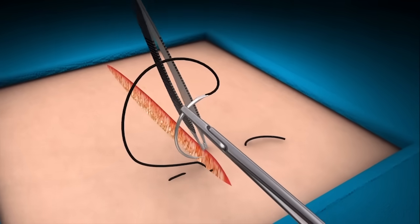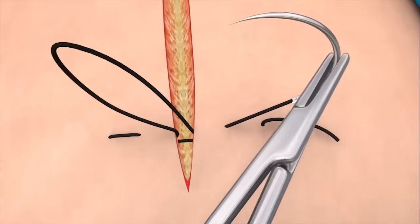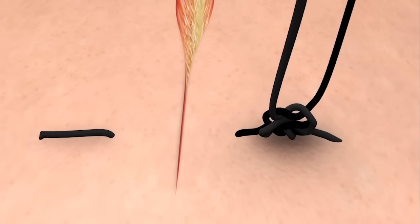Repeat on the opposite side of the wound from inside to outside. Pull the suture through and then tie a standard knot without excess tension.